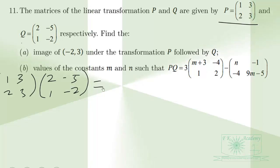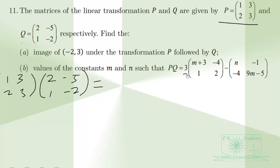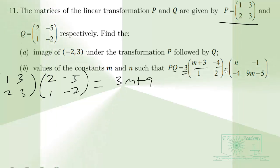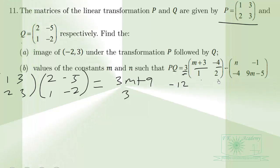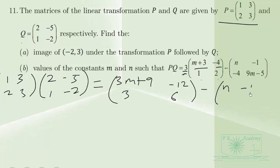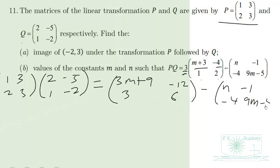The right-hand side involves the scalar 3 multiplying a matrix. Expanding the scalar multiplication gives entries 3M+9, -12, 3, and 6 for the first matrix term. The second matrix has entries N, -1, -4, and 9M-5, which will be subtracted from the first.